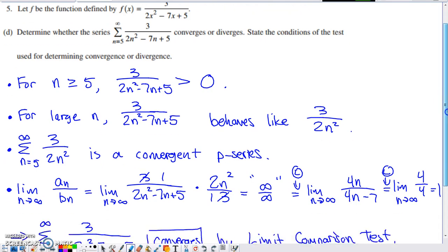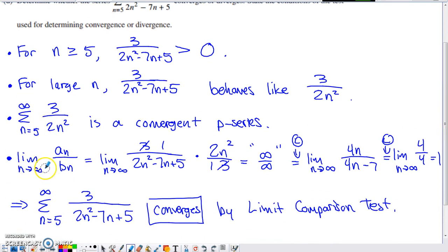what I can go ahead and do is use my limit comparison test, check the limit as n approaches infinity of the series that I started, the rule for the series I started with, divided by the rule for the series I'm comparing with. If this limit ends up being positive and finite, whatever my series that I'm comparing with does, the one that I'm looking for a conclusion about is going to do the same thing.